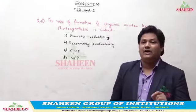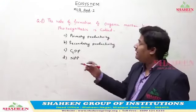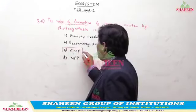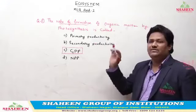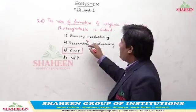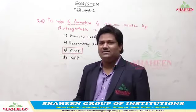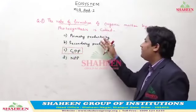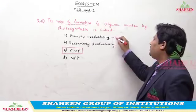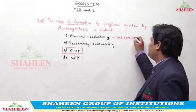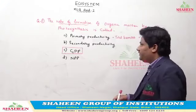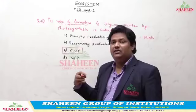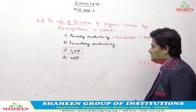The rate of formation of organic matter by photosynthesis in plants — if we are talking about the rate of formation, then we select the answer GPP, that is gross primary productivity. Primary productivity means the total amount of biomass produced in plants by photosynthesis. GPP is the rate of formation of biomass in plants by photosynthesis.